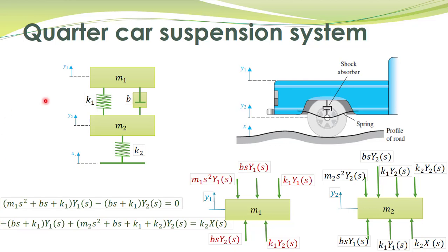One important point: we have omitted the effects of the weights of these masses. We do this because we are interested in the dynamic (transient) characteristics. Once the system is assembled, the weights play their static role and have no effect on the transient characteristics. Since we are only interested in transient characteristics, the effects of weights are omitted. These two equations fully describe the mathematical model of this quarter car system.